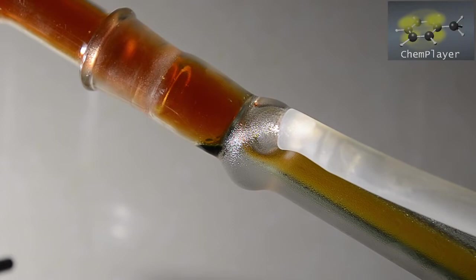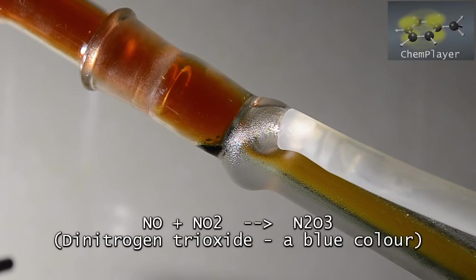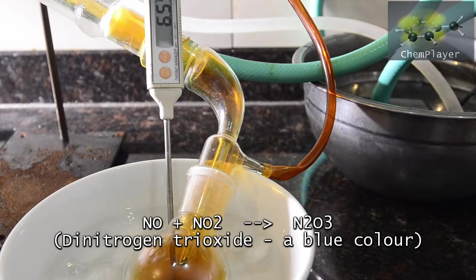The reaction with nitric acid also produces some nitrogen monoxide, or nitric oxide. Although it's not supposed to happen except for at low temperatures, we seem to have some of the nitric oxide reacting with the brown nitrogen dioxide to form dinitrogen trioxide, which is then obviously soluble in the liquid nitrogen dioxide.